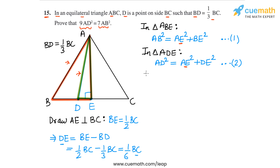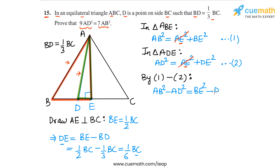Subtracting equation 2 from equation 1: on the left-hand side we get AB² minus AD². On the right-hand side, the AE² terms cancel, leaving BE² minus DE². Now we will write both BE and DE in terms of BC — BE is one-half of BC and DE is one-sixth of BC.